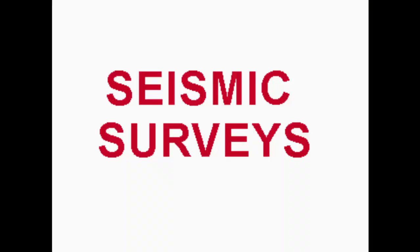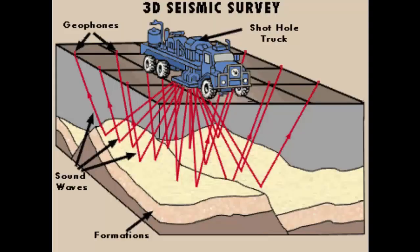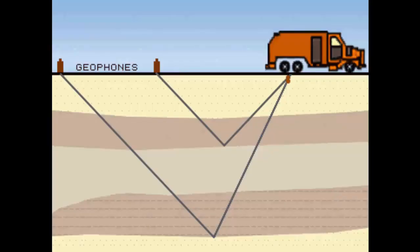The two most commonly used seismic techniques are the reflection and refraction surveys. Both of these techniques use the principle of travel time of sound waves through a formation. In reflection surveys, a small charge is exploded in a shallow well called the shot hole. Receivers, or geophones as they are known, are placed in a straight line on either side of the shot hole.